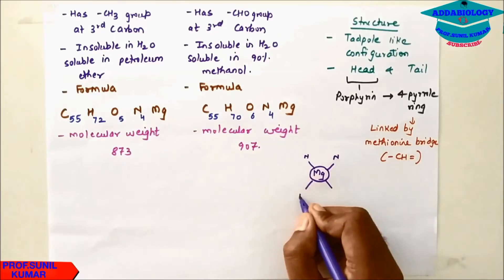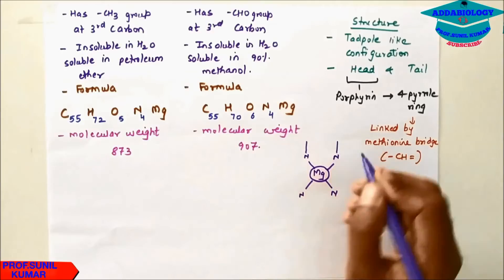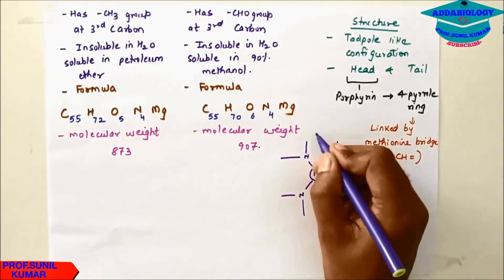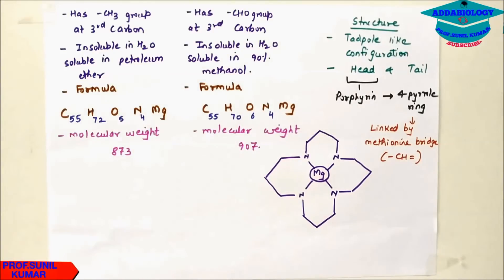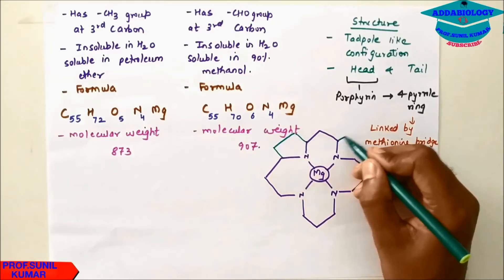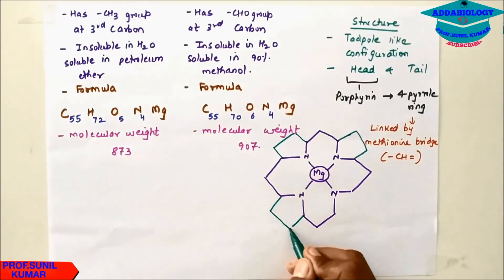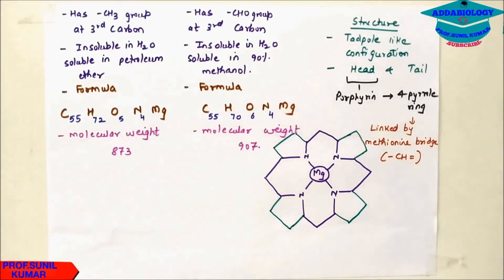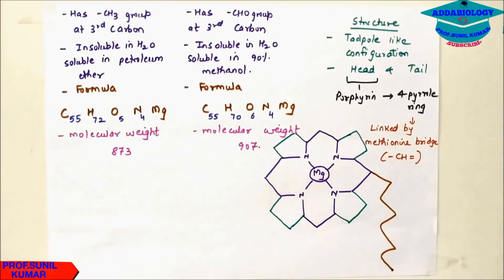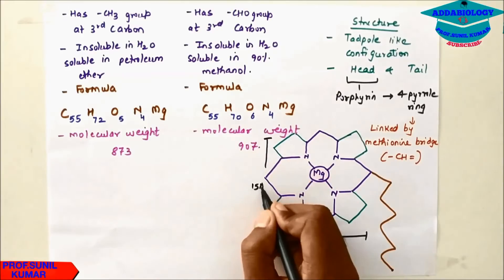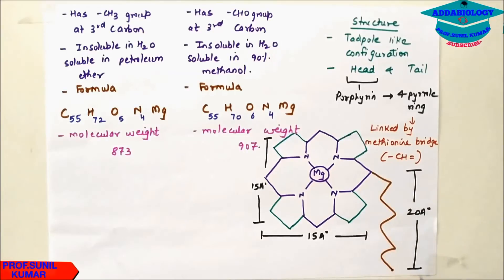In drawing the structure, we place nitrogen at four corners — hence N4 in the formula. From each nitrogen we draw a hexagon to get four hexagon structures, and then fill the remaining corners with pentagons. From one end, we draw a long tail called the phytol tail. The head of the chlorophyll has dimensions of 15 Angstroms by 15 Angstroms, and the tail has a length of 20 Angstroms.